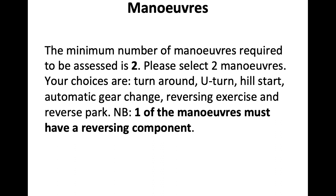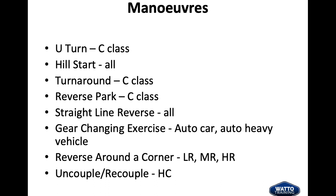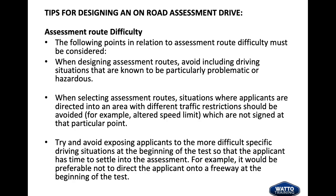For crossings, include a pedestrian crossing, children's crossing, and level crossing — obviously some areas have no train lines, so that would be relevant where applicable. For maneuvers, a minimum of two are required and there must be at least one maneuver with a reversing component. The maneuvers to choose from are: U-turn (C-class only), hill start (all classes), turnaround/three-point turn (C-class), reverse park (C-class), straight-line reverse (all classes), gear-changing exercise, auto car, auto heavy vehicle, reverse around the corner (LR, MR, HR), and uncouple/recouple (HC).